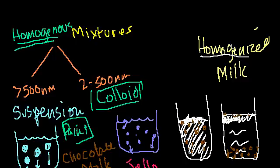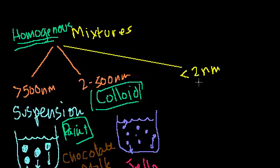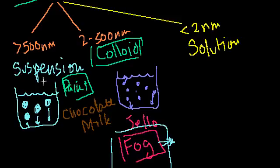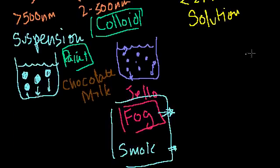If you get below 2 nanometers, you're now in the realm of the solution. Although this is very interesting in the everyday world—and this is a fun thing to think about in your house when you encounter things: is this a suspension? Is it a colloid where it'll stay in this kind of nice, thick state like jello or fog or smoke? Or is it a solution?